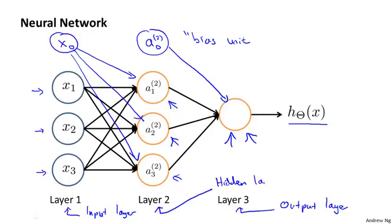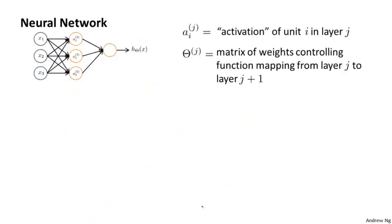The term hidden layer isn't a great terminology, but the intuition is that in supervised learning, you get to see the inputs, you get to see the correct outputs, whereas the hidden layer are values you don't get to observe in the training set. If it's not x, then it's not y, and so we call those hidden. And later on, we'll see neural networks with more than one hidden layer. But in this example, we have one input layer, layer one, one hidden layer, layer two, and one output layer, layer three. But basically, anything that isn't an input layer and isn't an output layer is called a hidden layer.